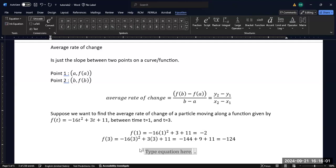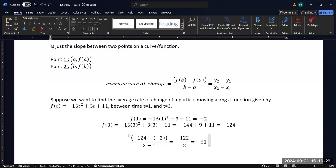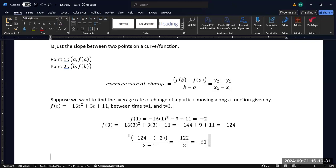And so now my formula will look like -124 minus -2, watch your signs, 3 minus 1. So this is going to be -124 plus 2 would be -122 divided by 2, which is going to be -61. And so that's your average rate of change.